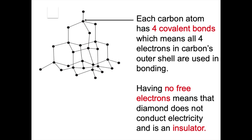Carbon is in group four, so if it has four bonds all its outer shell electrons are used in bonding. There are no free electrons, there are no spare electrons, and this means that diamond is unable to conduct electricity. To conduct electricity it would have to have spare or free electrons that are able to move over the structure. It doesn't have this, so diamond is an insulator.